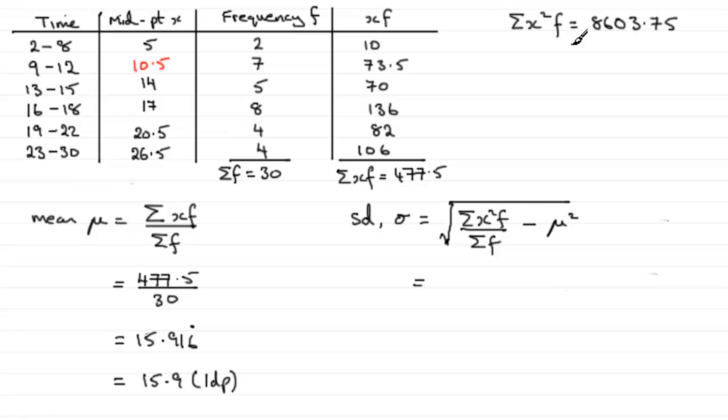So all we've got to do then is to work out the square root of 8603.75, divide that by Sigma f, which is 30, minus the mean, 15.916 recurring, all squared.